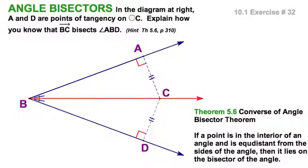And that means these two segments, or I should say, this point C is equidistant from the two rays. And therefore, it is on the angle bisector.